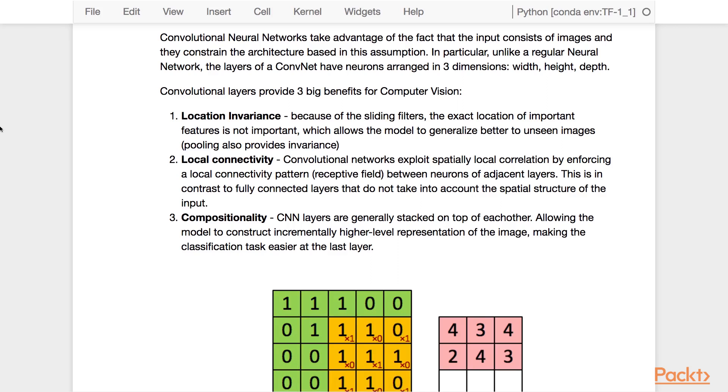First, location invariance. Because of the sliding filters, the exact location of important features is not important, which allows the model to generalize better to unseen images. We'll see later that in pooling, we also provide some kind of invariance.